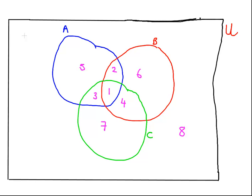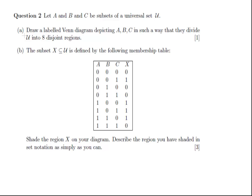That's that part done. Now the next part of the question is, the subset X is a subset of U and it's defined with the following membership table. What we have to do is depict this on our Venn diagram. What we have to find is where we have a one here. There are four regions where there is a one. Let's highlight these regions here.